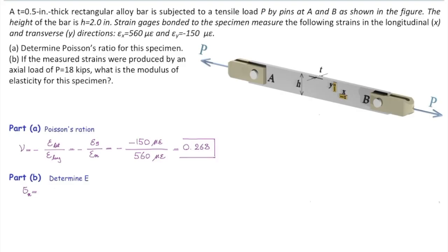And I know how much is the area, so I can determine stress. Sigma x is E epsilon x, or E would be sigma x over epsilon x. Epsilon x is given - it's 560 micro epsilon. I need to determine how much is stress in that direction.